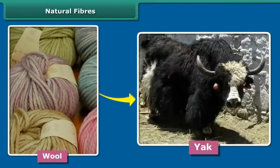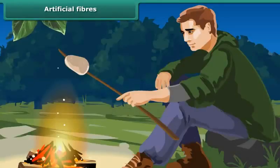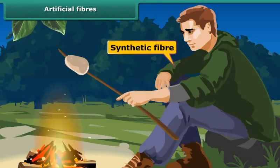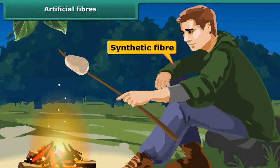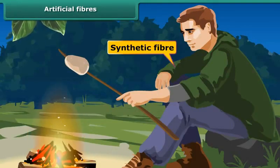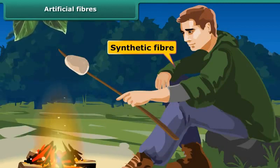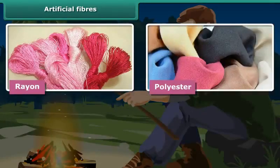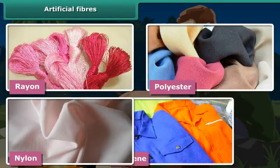Wool is obtained from the hair of animals like sheep, goat, rabbit, yak, and camel. Artificial fibers: You might have heard that we should not wear synthetic clothes while working near fire. These clothes have yarns of man-made artificial fibers, which catch fire very easily. Some examples of synthetic fibers are rayon, polyester, nylon, and terylene.